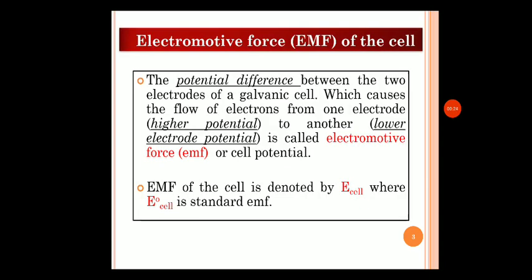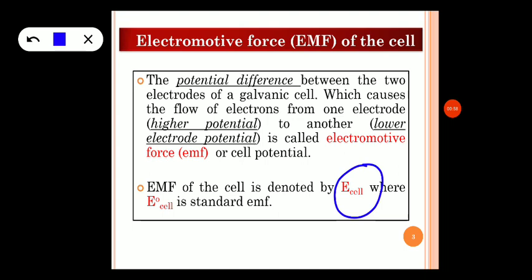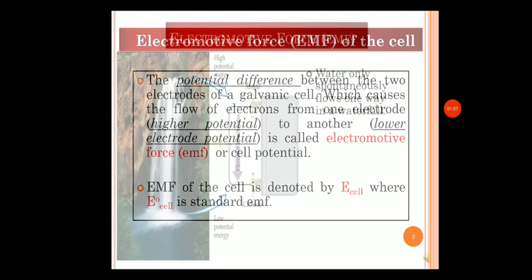Before we understand the measurement of EMF using the potentiometer, let us rethink about electromotive force — this has been explained in the previous videos. The potential difference between the two electrodes of a galvanic cell which causes the flow of electrons from the electrode of higher potential to the electrode of lower potential is known as electromotive force, represented using the symbol E subscript cell, or E⁰ subscript cell for standard EMF.